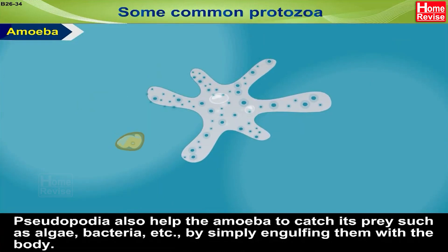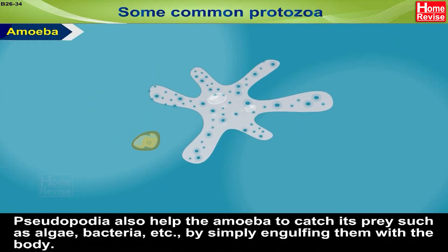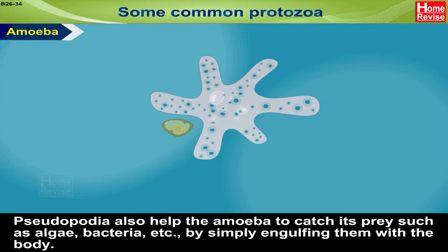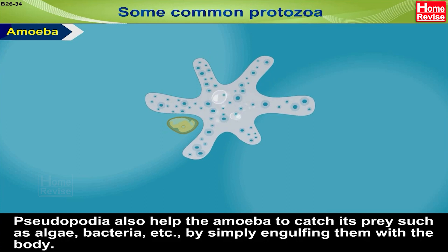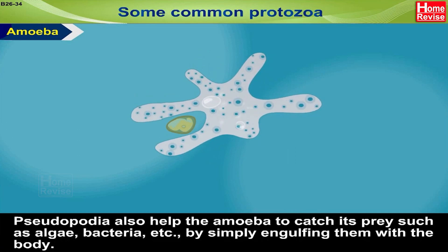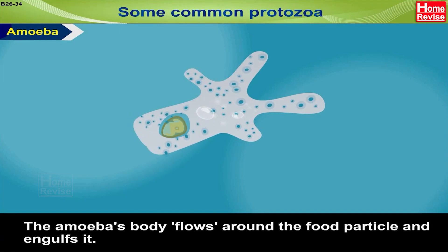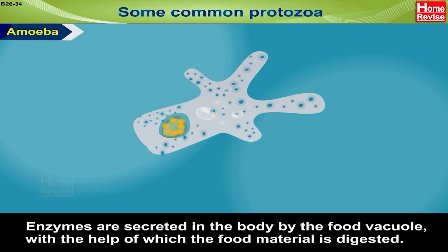Pseudopodia also help the amoeba to catch its prey such as algae and bacteria, by simply engulfing them with the body. The amoeba's body flows around the food particle and engulfs it. Enzymes are secreted in the body by the food vacuole, with the help of which the food material is digested.